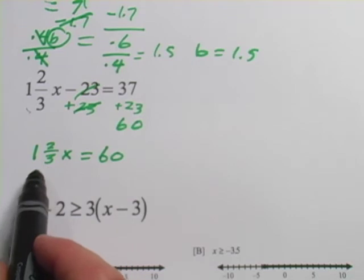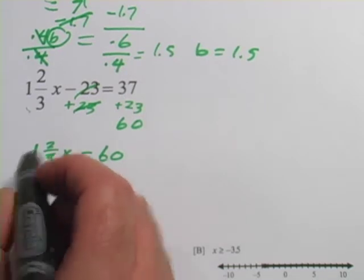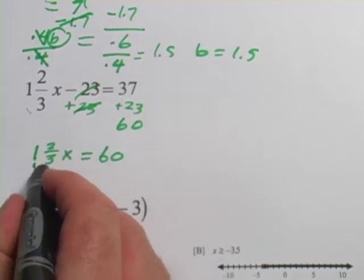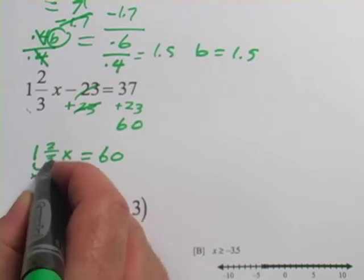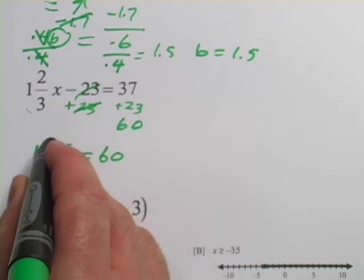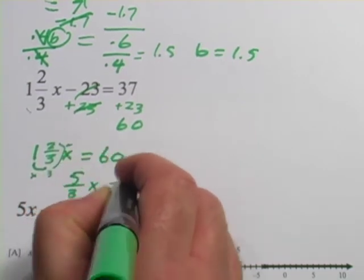Now to deal with this fraction better, I should take it out of a mixed number and put it into an improper fraction. And remember how to do that, you take whatever number is here and multiply it by the bottom. So 1 times 3 is 3, and then we add that to the top, and that's 3 plus 2 is 5, so this is actually 5 thirds x equals 60.